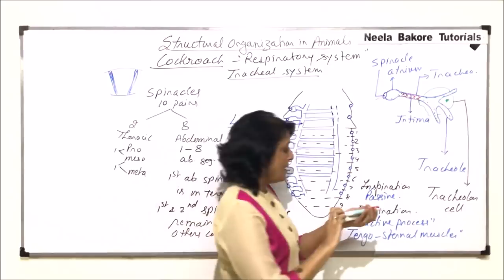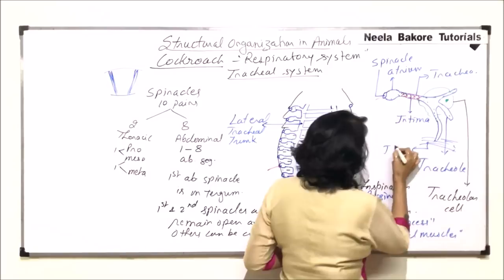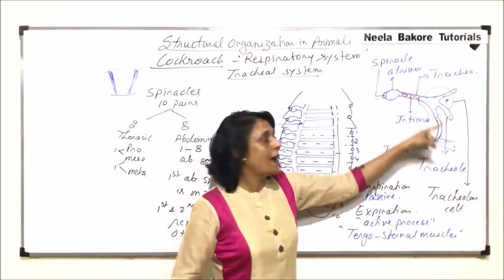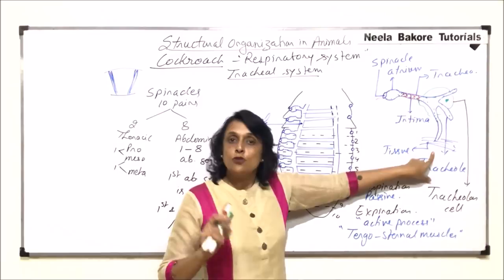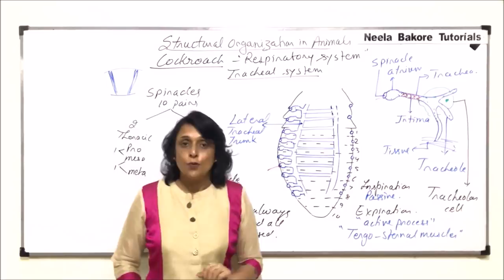How is oxygen supplied? The tracheoles extend and reach up to a tissue. When the insect is moving, air directly reaches the tissue through the tracheoles. When the insect is not moving, the fluid fills inside the tube, oxygen diffuses into the fluid, and slowly that oxygen is supplied to the organ or tissue.